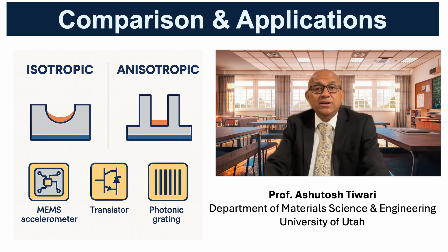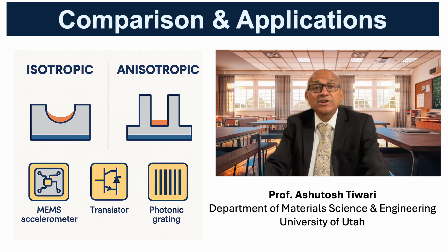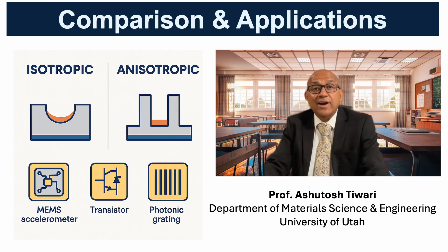To highlight the comparison: wet etching is a chemical process that removes material isotropically — equally in all directions. It is simple, fast, and inexpensive, making it ideal for large area processing where extreme precision is not essential. Dry etching, particularly reactive ion etching RIE, relies on energetic ions and reactive species to achieve anisotropic profiles with vertical sidewalls. This directional control allows for the definition of extremely fine patterns at the nanoscale.